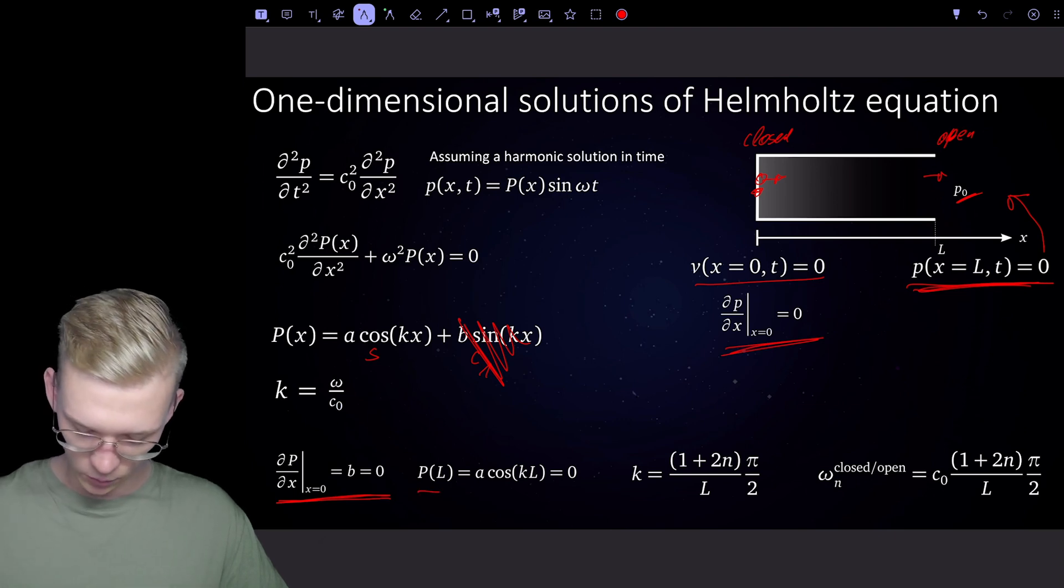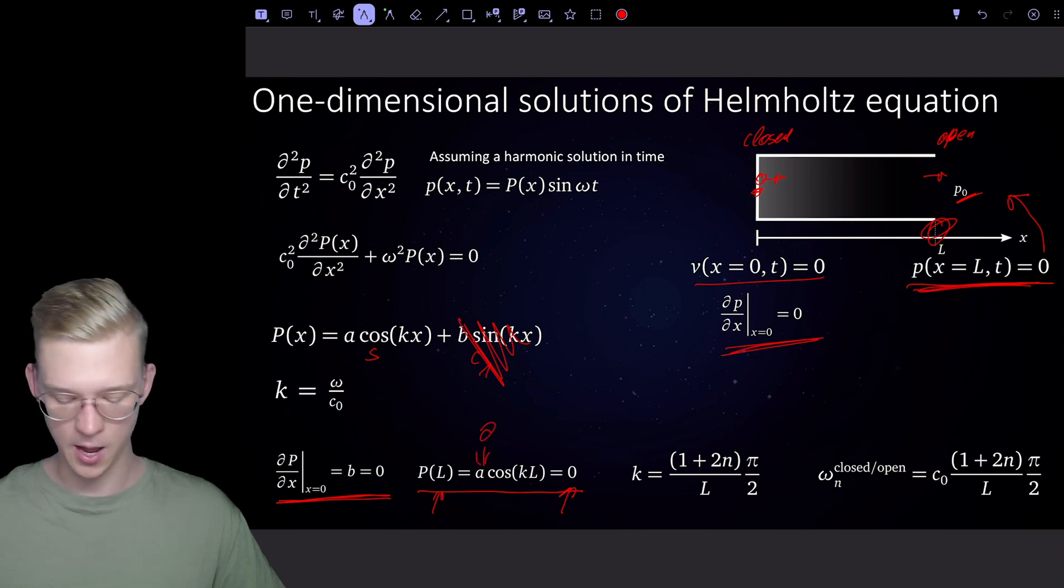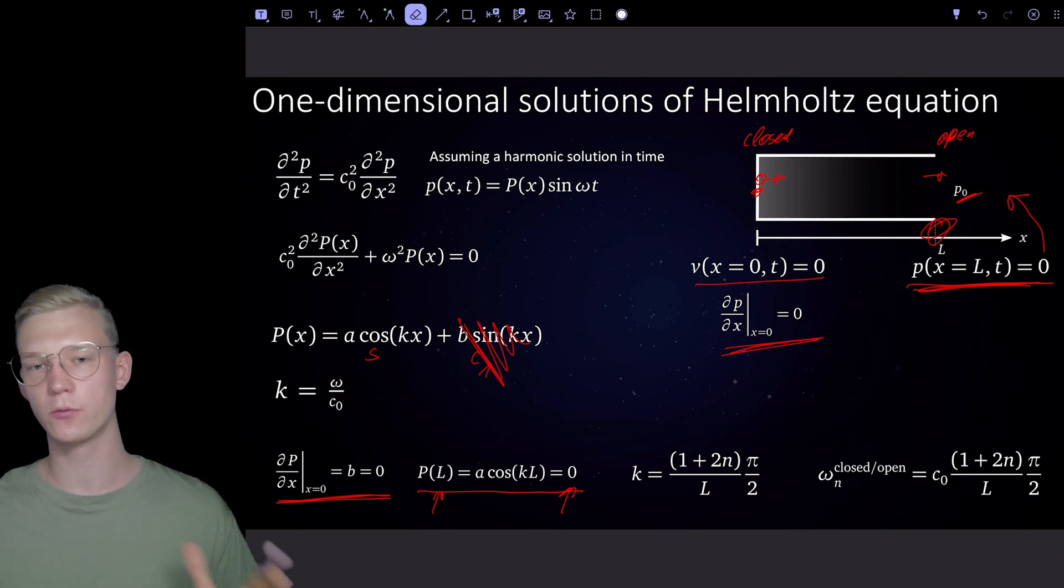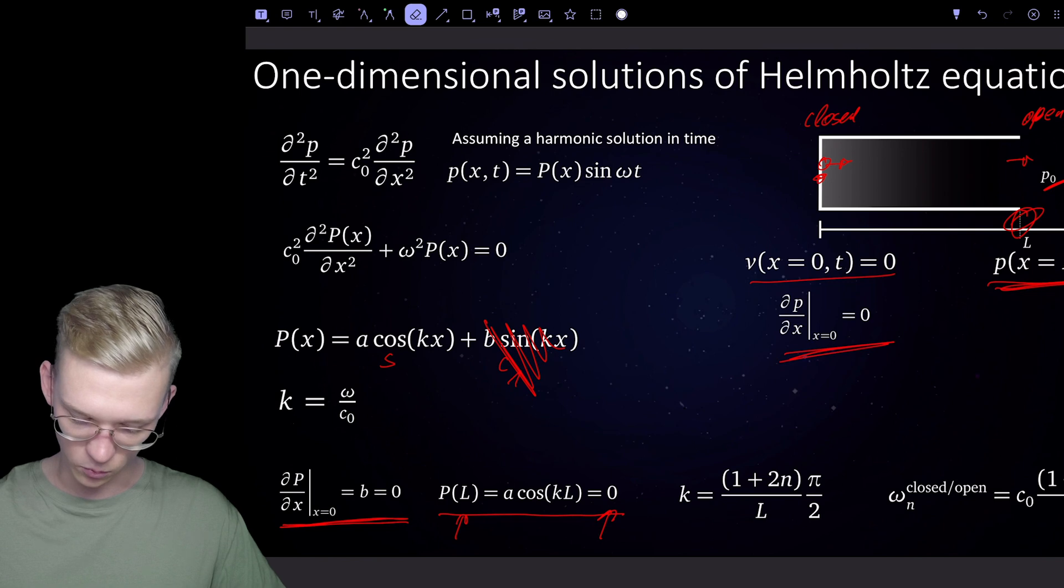Then we are left with this equation. And the pressure at the end of the tube must be equal to zero. We could say well pressure is zero, then a is also equal to zero. But this is the trivial solution that we are not interested in. Because if we're saying a is zero, we're saying the pressure is zero everywhere and we have no vibration, and this is not what we want.